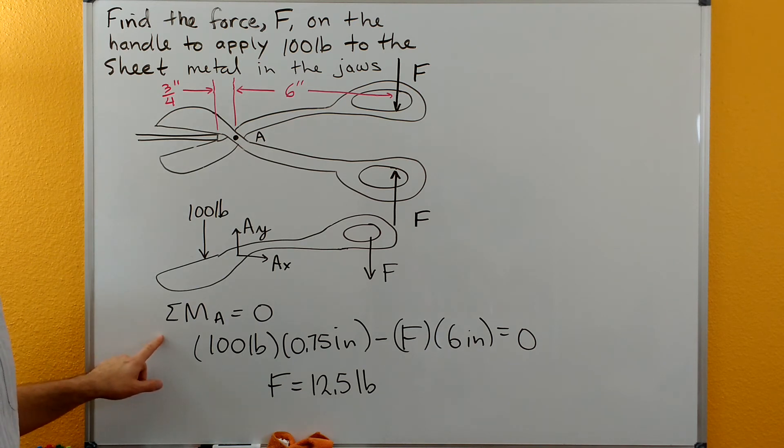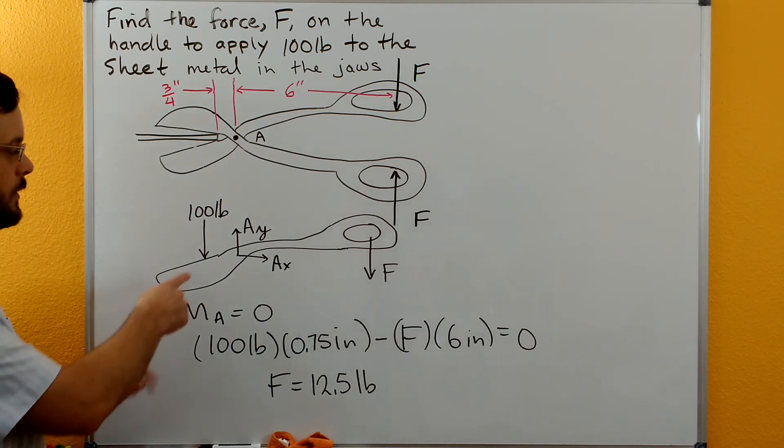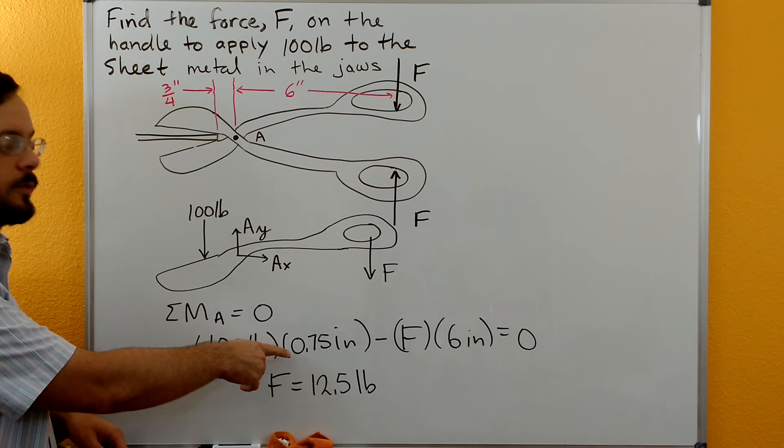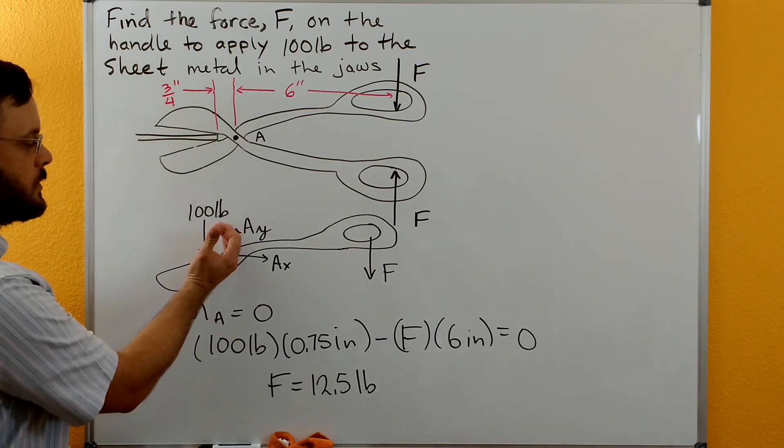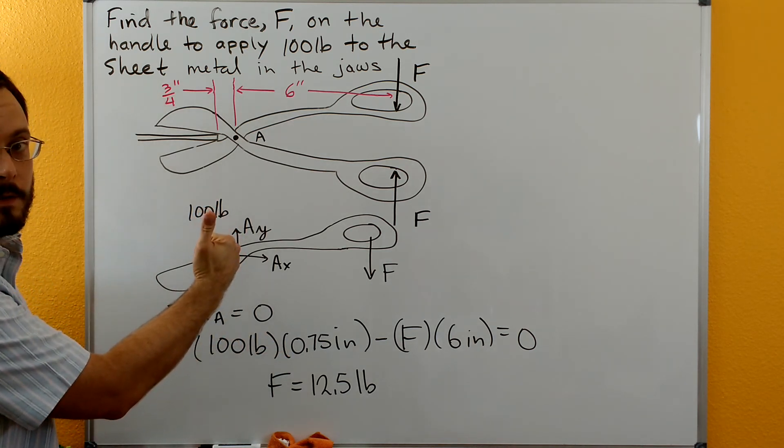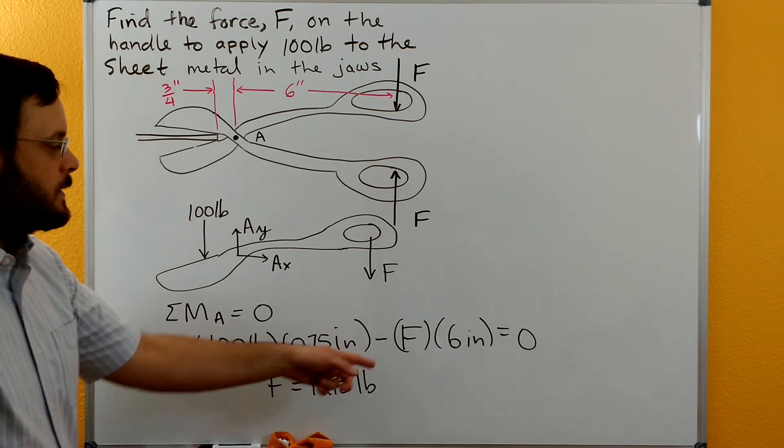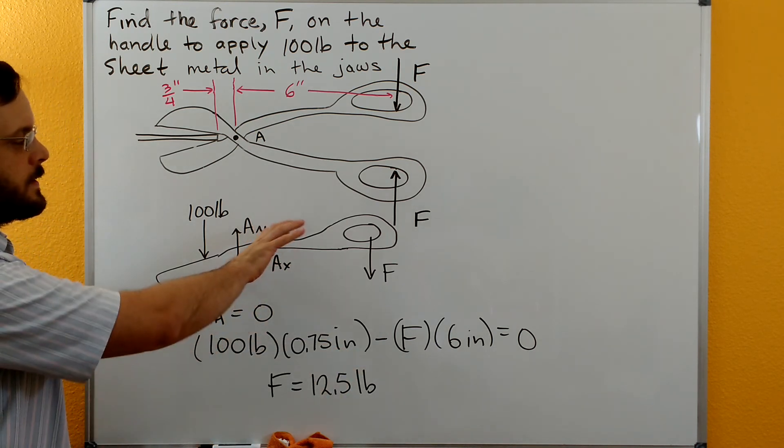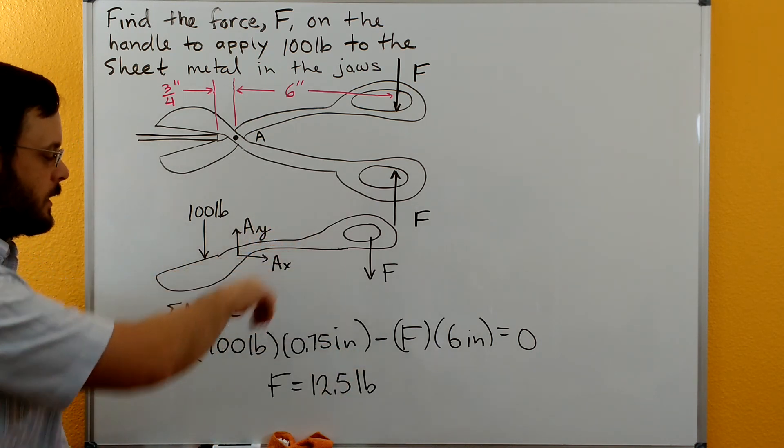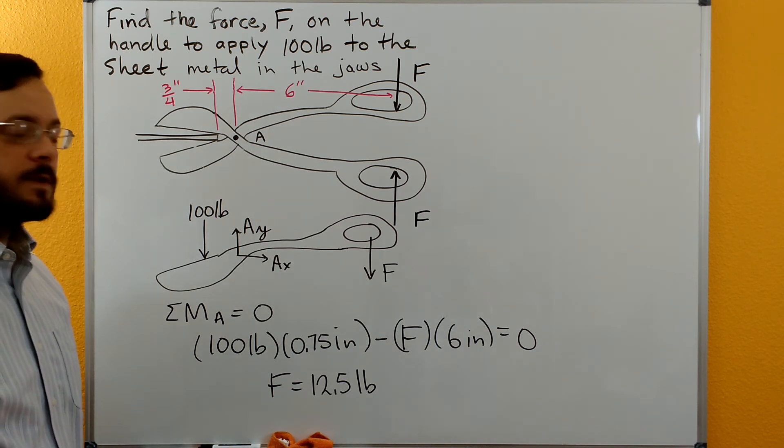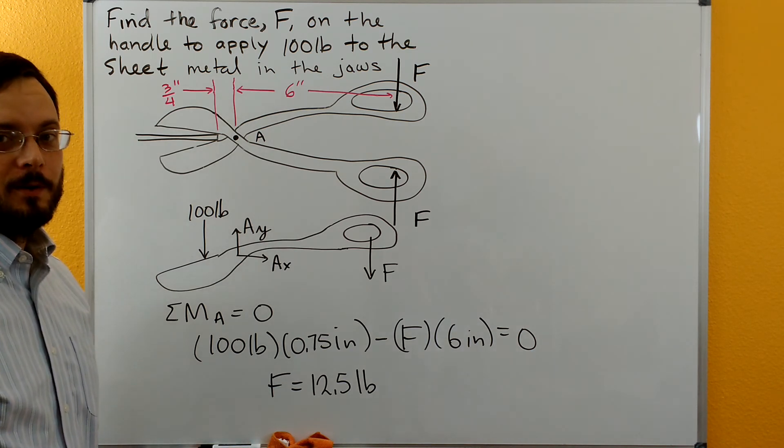So we can do a sum of moments about A and get that we have a hundred pounds times the three quarters of an inch, so 0.75 inches. That's going to give us a positive moment about A minus F times six inches. That's our negative moment about A over here. And solving for this we get that F is equal to 12.5 pounds.